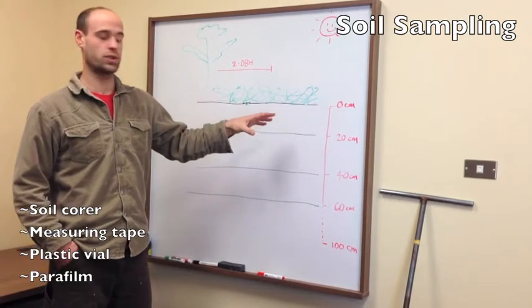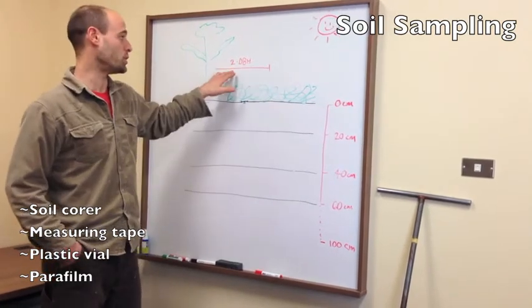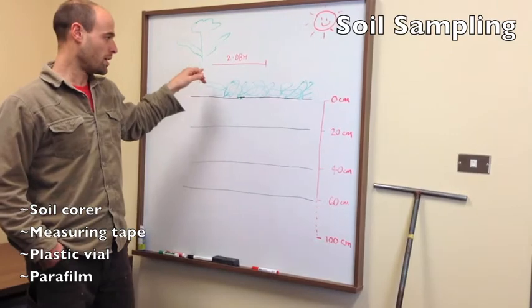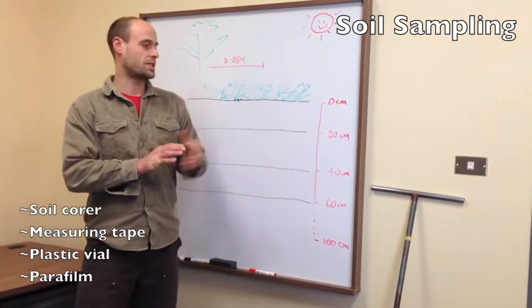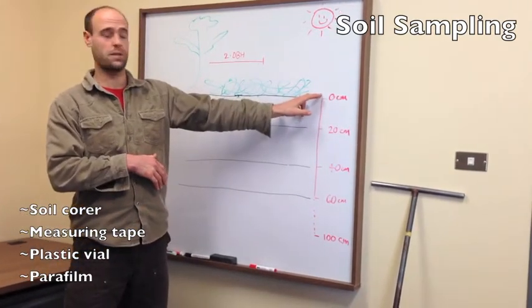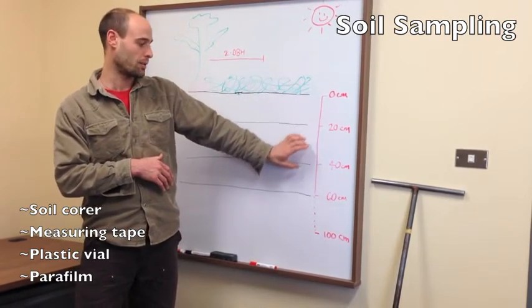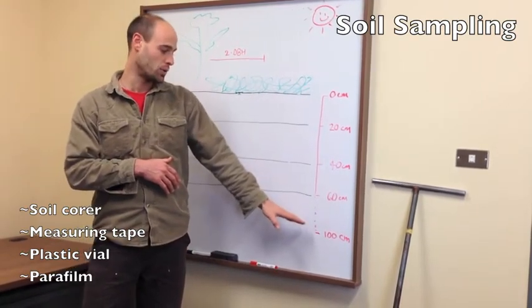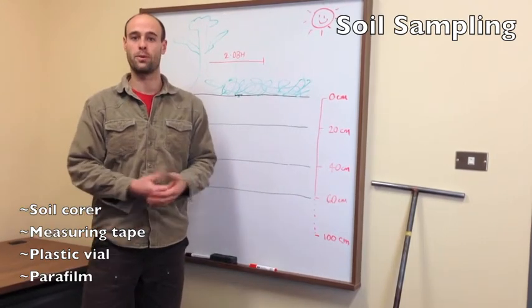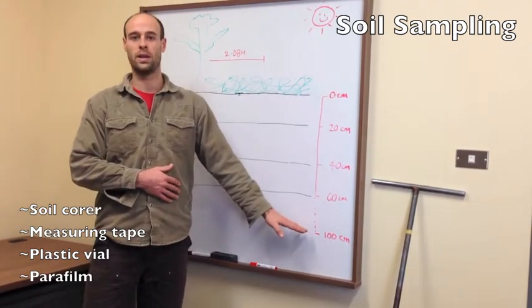Your location of your soil profile needs to be 2 dBH from that sample tree. What we're looking for is samples that start at the surface, 0 centimeters, and then a sample for every 20 centimeter increment or interval down to essentially the bottom of your soil profile, or at least down to 1 meter.